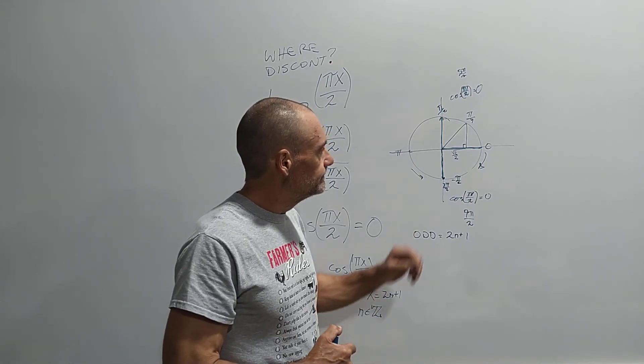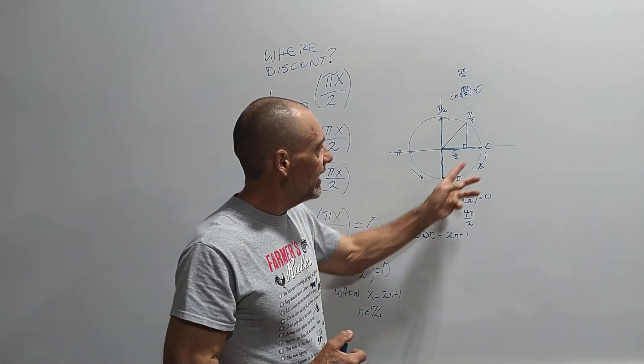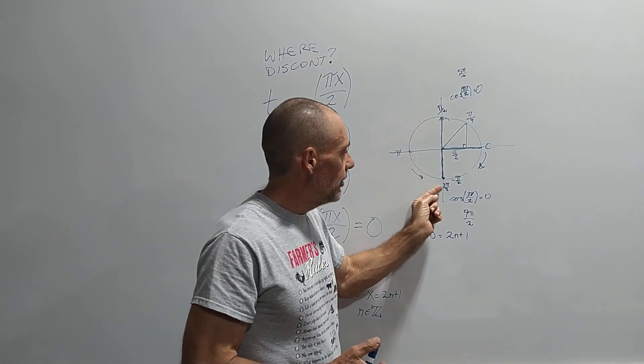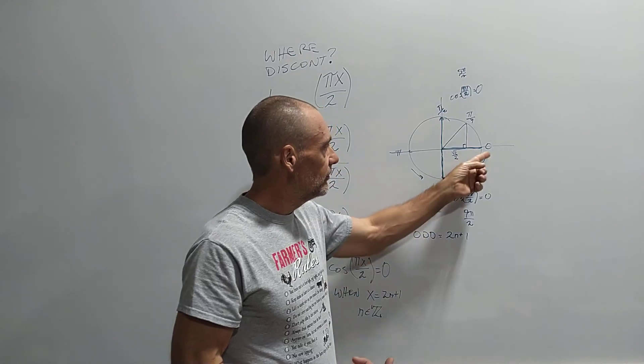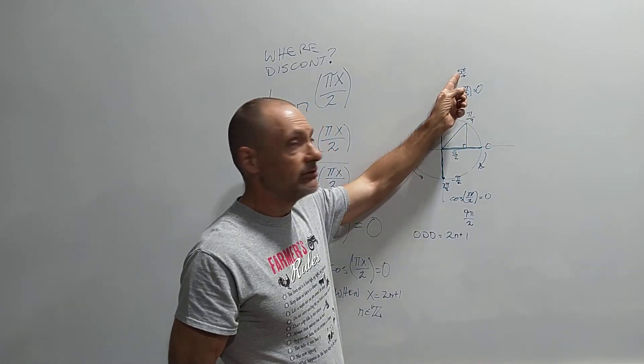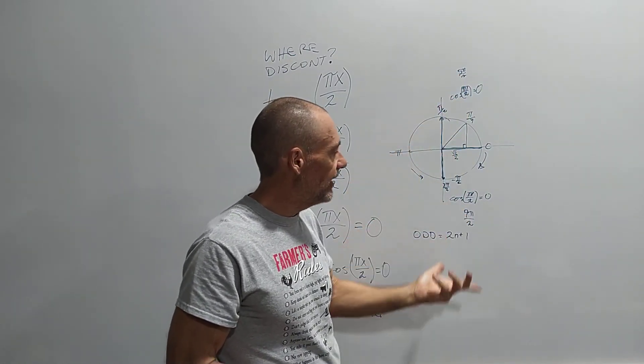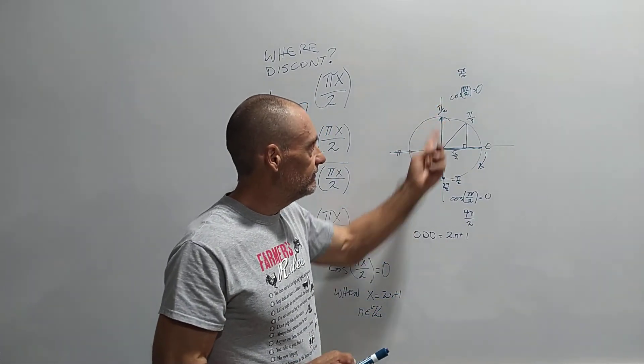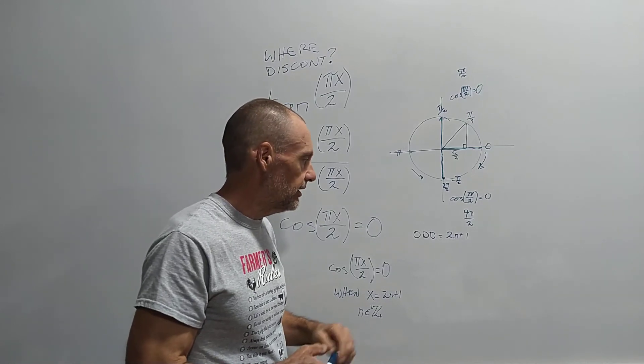So if we look at this, right, what do we have? We have pi over 2, we can call this 1 pi over 2, right? 2 pi over 2, 3 pi over 2 is a problem. 4 pi over 2, 5 pi over 2 is a problem. 6, 7 pi over 2, you know, these are the odd numbers. 1, 3, 5, 7, 9, on and on.